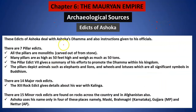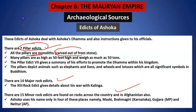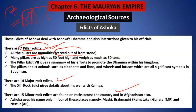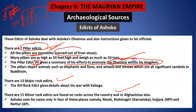Let me explain. First of all, before we move into those scripts, let's take a quick summary of the edicts. There are a total of seven pillar edicts. You don't have to remember all of them, but one important thing is all the pillars are monolith — that means made from a single stone. Matlab, agar ek bada sa patthar rakha hua hai, from a single stone if you cut and make the entire pillar, it is known as a monolith monument.